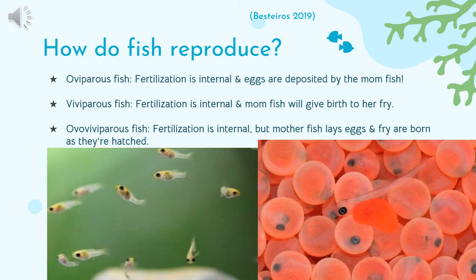Now let's look more deeply into how fish reproduce. There are three types of reproduction for fish: oviparous, viviparous, and ovoviviparous. For oviparous fish, fertilization is external, which means the female fish lays her eggs and they are fertilized by the male. The eggs could be deposited on the bottom of the tank or ocean, float freely, stick to rocks, or be placed in nests made by the mom.